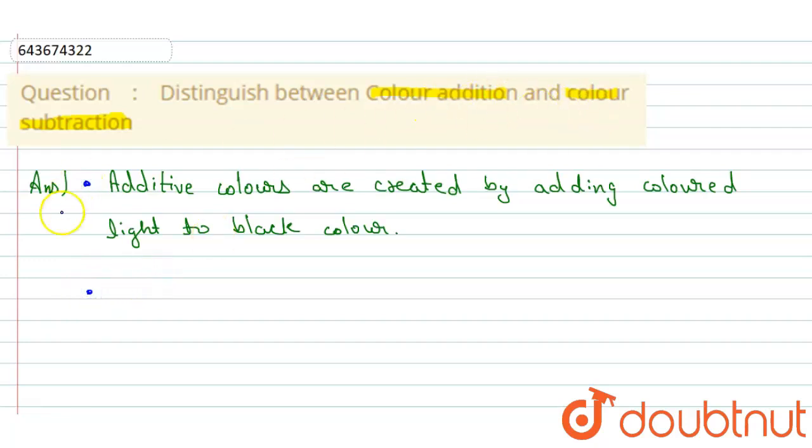And when we talk about the color subtraction, color subtraction begins with white light to produce ultimate colors.